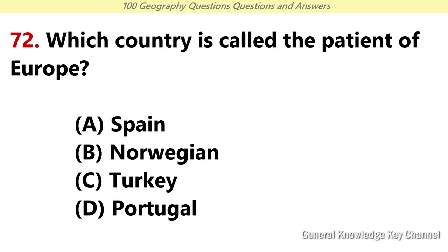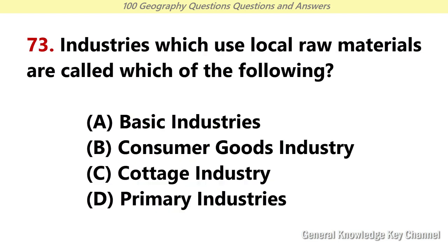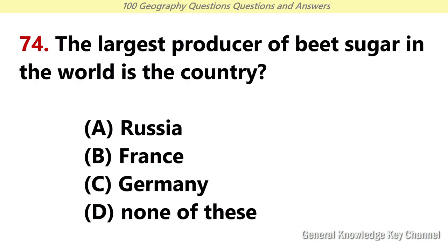Which country is called the patient of Europe? Answer C: Turkey. Industries which use local raw material are called which of the following? Answer C: Cottage industry. The largest producer of wheat sugar in the world is which country? Answer A: Russia.